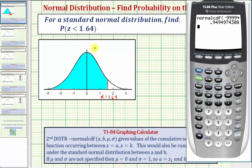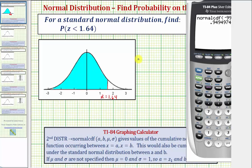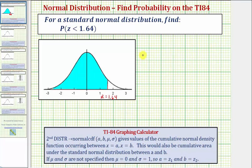Which is also the probability that z is less than 1.64. So notice how our probability is approximately 0.9495. So the probability that z is less than 1.64 is approximately 0.9495.